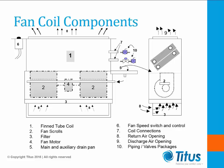Any fan coil equipped with a cooling coil should have a drain pan installed below the coil to capture condensation. Depending on the type of fan coil, you may have the main drain pan extended out to capture pipe condensation within the valve piping package, or it could be a separate auxiliary drain pan. A well-designed fan coil unit will have low water pressure drop through the coil as well as an efficient fan and motor assembly for quiet operation and low energy consumption.